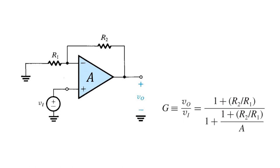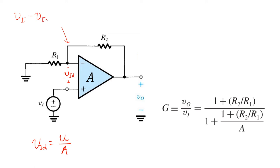Next, let's reanalyze the non-inverting configuration for an op-amp that has a finite gain A, but is otherwise ideal. Since the op-amp gain is finite, we have to relax the virtual short-circuit assumption. We can no longer assume the two op-amp input terminals are at the exact same voltage. Instead, we know that the input differential voltage Vid is equal to the output voltage Vo divided by the op-amp gain A. Therefore, we can write the voltage at the negative terminal as Vi minus Vid, or Vi minus Vo over A.